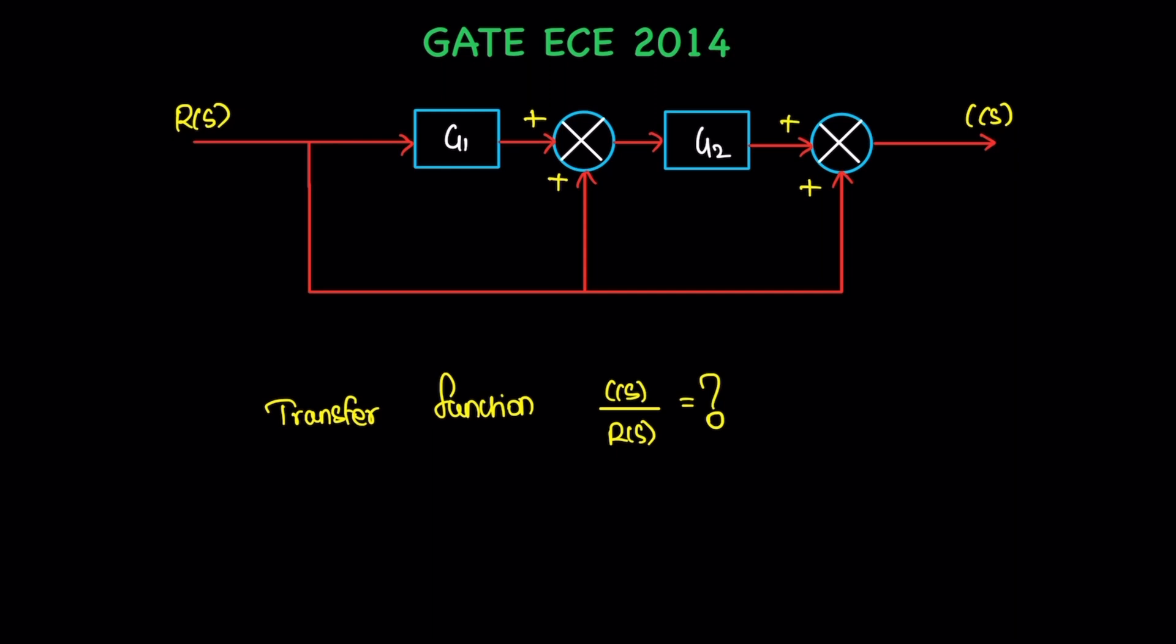A block diagram is given. We need to find out the transfer function C divided by R. So, regular formula only: the numerator value is equal to forward path gain and the denominator is feedback gain value.